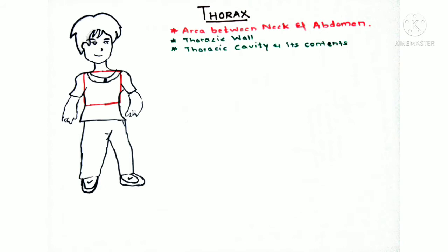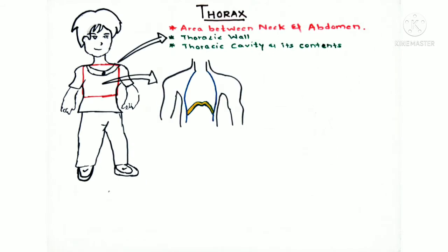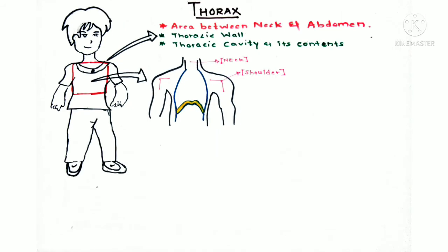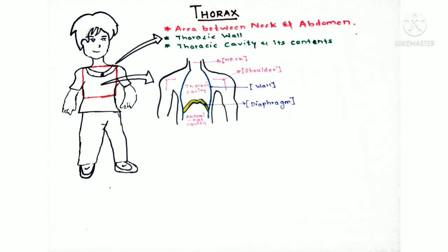So what are the different components of this thoracic region? The first component is the thoracic wall, and the second is the thoracic cavity, which contains cavities like the pleural cavity and the mediastinum, as well as organs like the heart, lungs, and the great vessels. If you elaborate the diagram, you can see the thorax is connected with different regions like the neck, shoulder, and below the diaphragm, the abdomen.